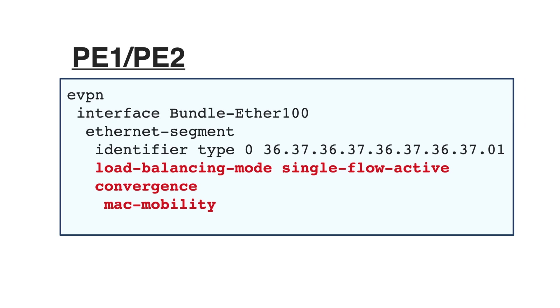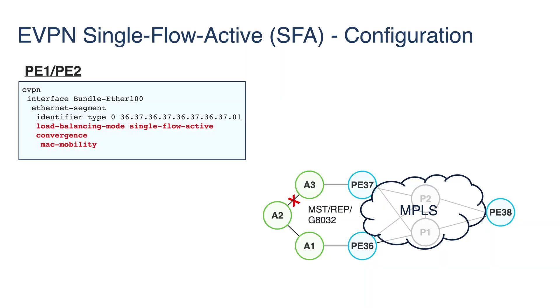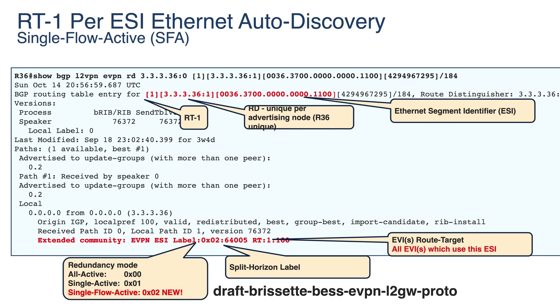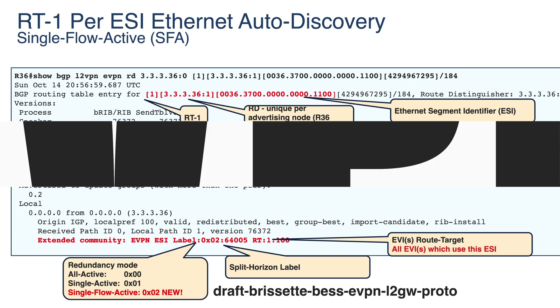Here is a very simple configuration, very similar to what we had for fast reroute for all-active and single-active. You can see the new load balancing mode — single-flow-active — convergence, and MAC mobility, basically enabling this for the gateway towards the L2 legacy. Here is an example of route type 1 per ESI, and you can see on the bottom of the slide the new load balancing mode, which is single-flow-active. If you want to know more, you can look at the draft, which is also there on the bottom of the slide.